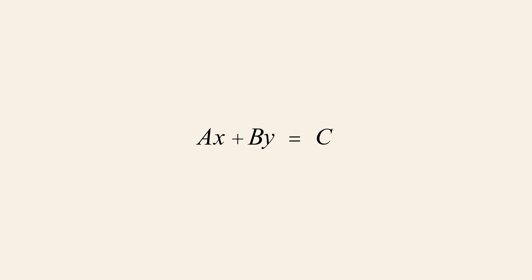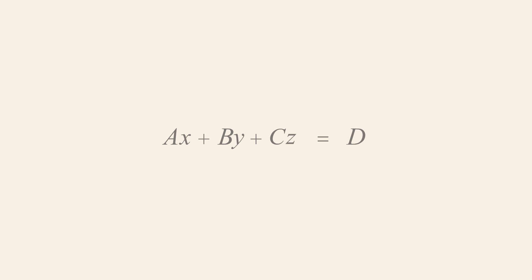Just as the standard form linear equation in two variables x and y is written as ax plus by equals c, a standard form linear equation in three variables x, y, and z is written as ax plus by plus cz equals d, where at least one of the coefficients a, b, or c must be non-zero.